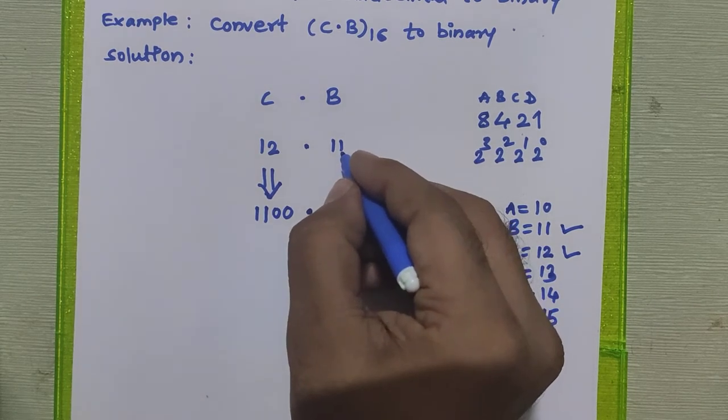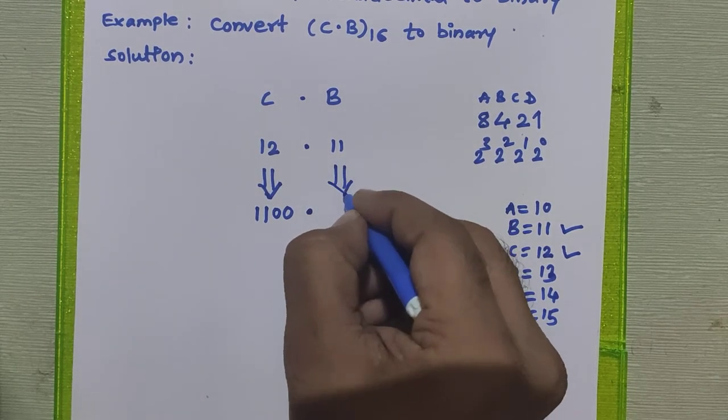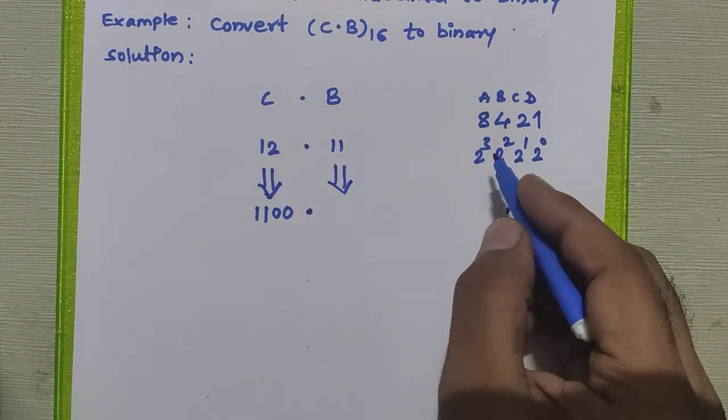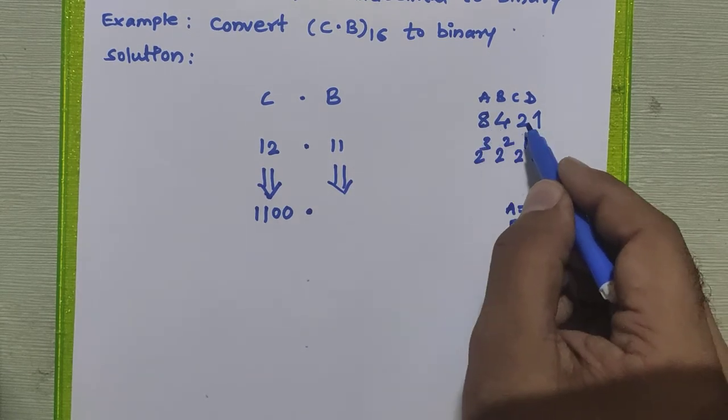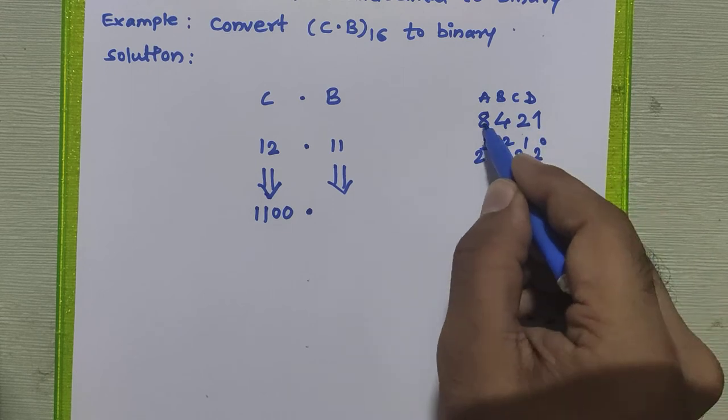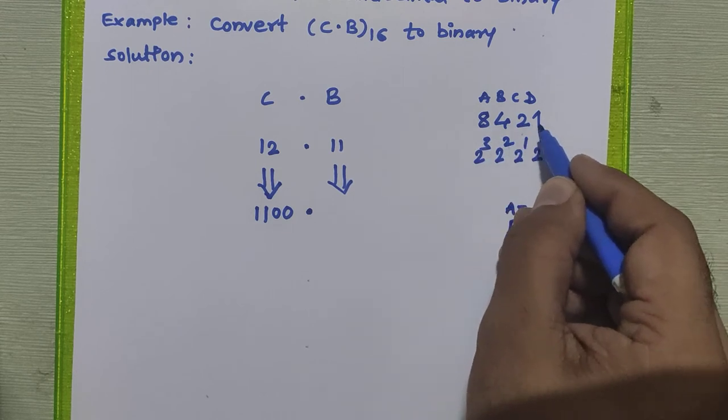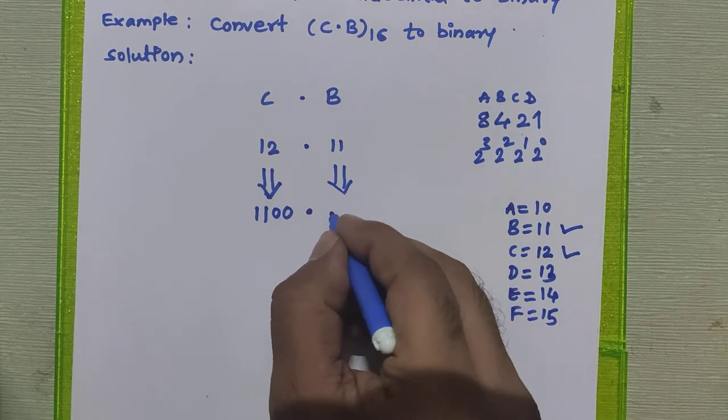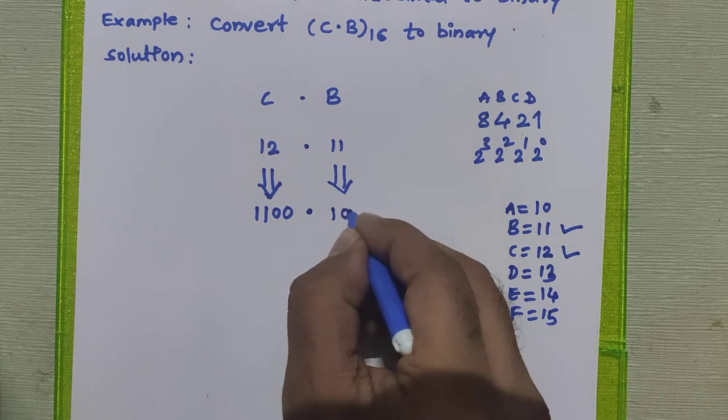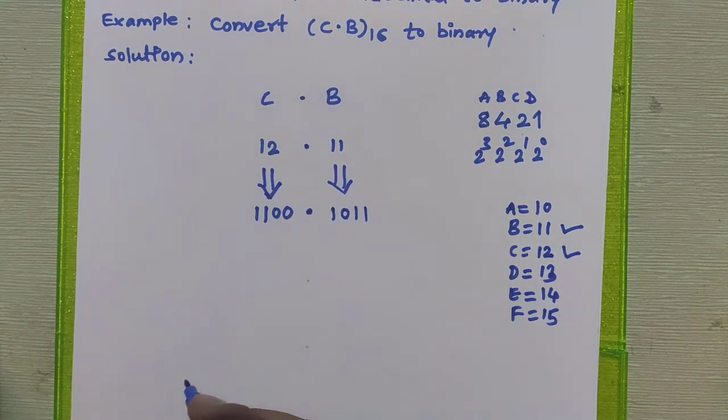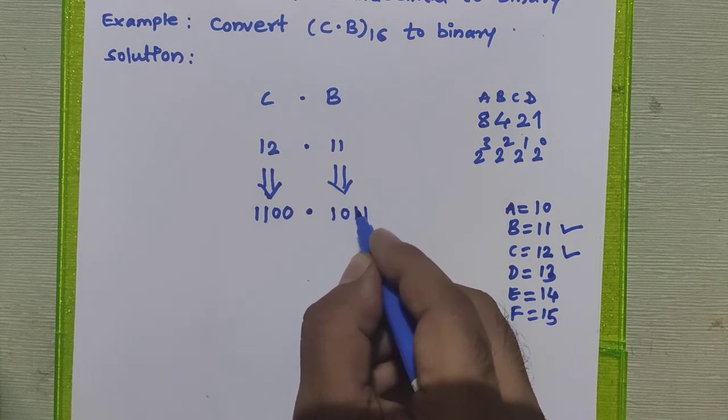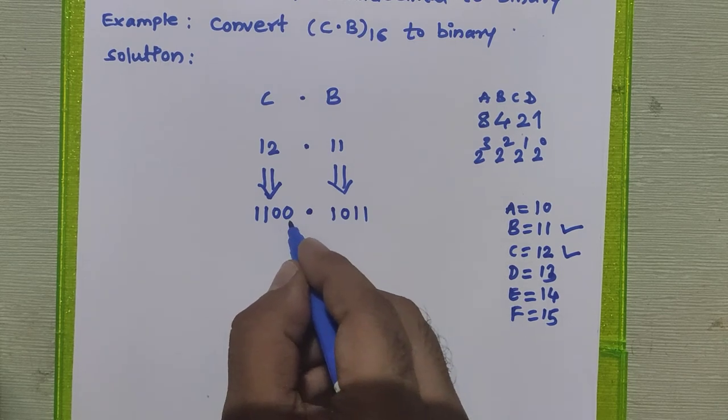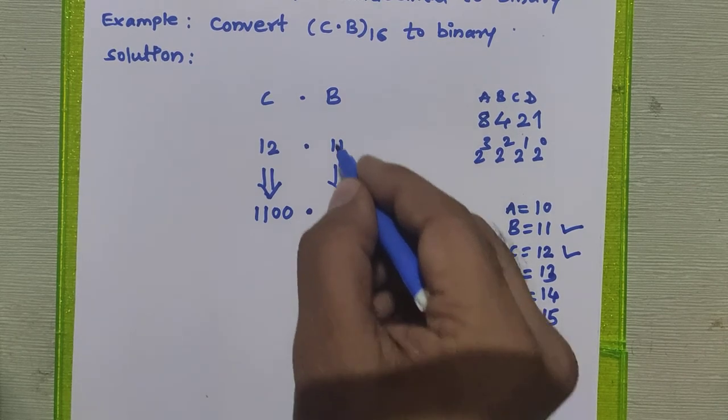Point. How do you represent 11 in binary? 11 is the combination of 8 plus 3, 8 plus 2 plus 1. So this bit, this bit, and this bit should be 1 and this bit should be 0. So it is 1011, which is 11 in binary. 1100 is 12, 1011 is 11.